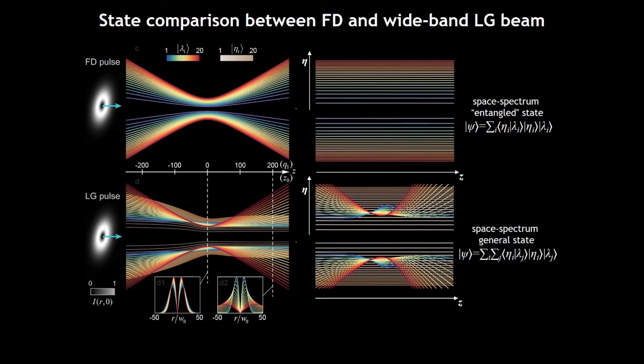For an isodiffracting pulse, the spatial state and the spectral state are perfectly coincident. Each spectral state is located at the corresponding radial ratio. And that's the spatial state and the spectral state are non-separable, fulfilling an entangled state.